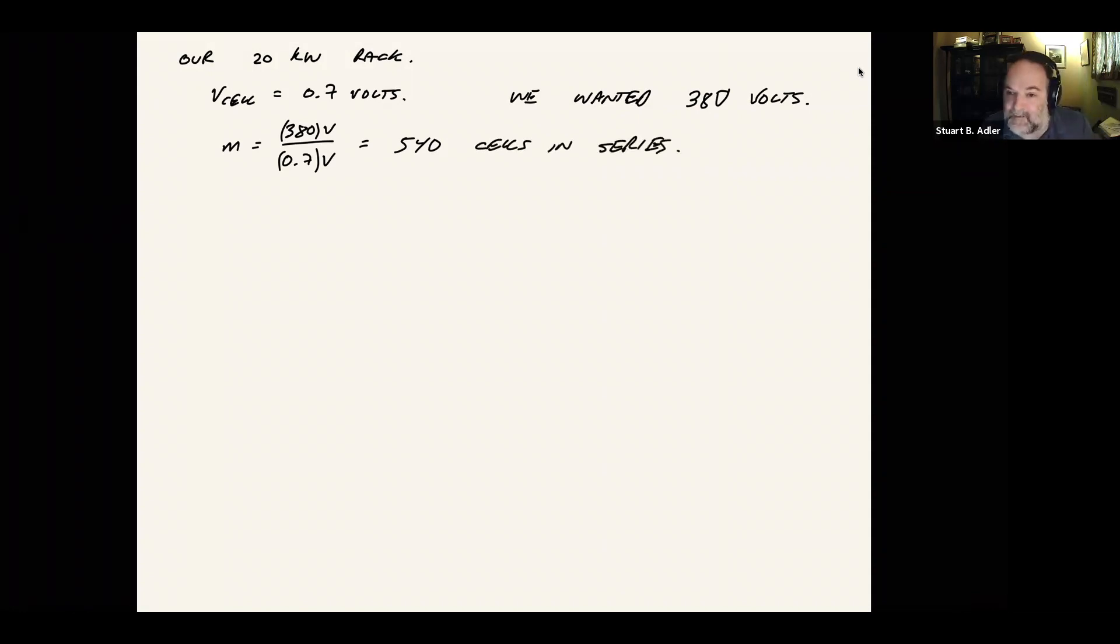So that's one impact of operating below the reversible cell potential. And then meanwhile, think about the electrical work. We said that this electrical work is M times V cell times I cell. So I cell, this is our 20,000 watts divided by 540 cells divided by 0.7 volts. This is going to be 53 amps we have to pass through our system.